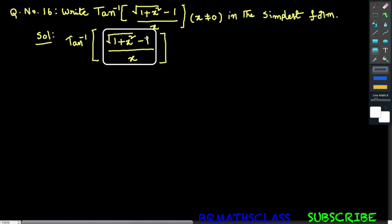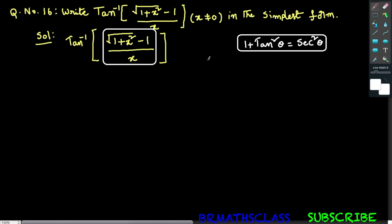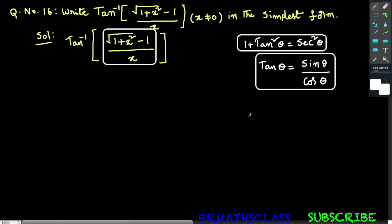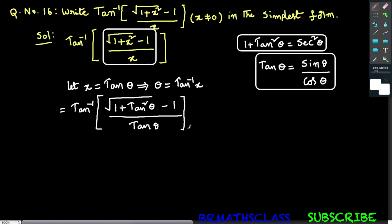I want to write this expression in the form of tan. To do that, I'll use trigonometric identities. We know the formula: 1 plus tan squared theta equals secant squared theta, and tan theta equals sine theta divided by cos theta. To write the simplest form, I will take x equals to tan theta. If we take x equals to tan theta, then theta equals to tan inverse x.